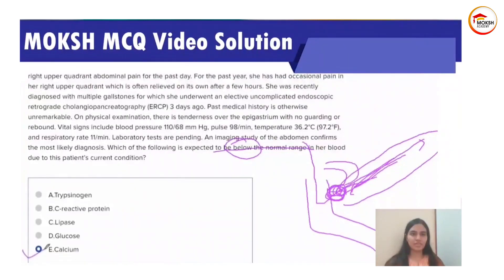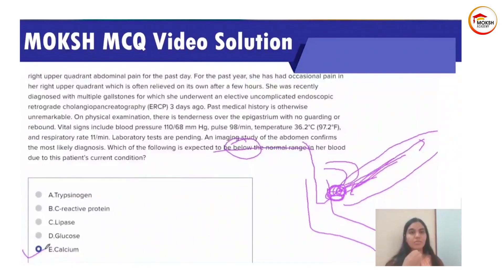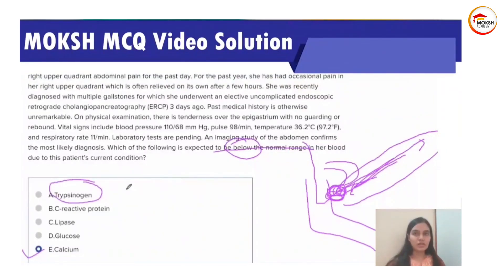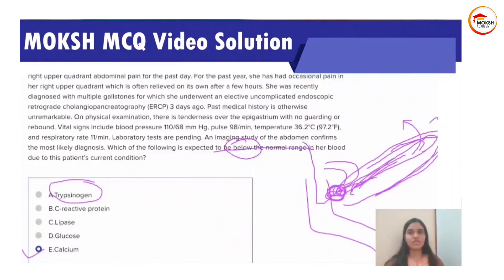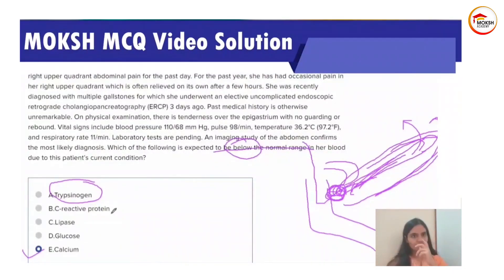Let's look at the other options to eliminate them, as you should always do on an exam. Trypsinogen is a marker for acute pancreatitis — because of elastase-mediated damage to capillaries, trypsinogen leaks back into the blood, so serum trypsinogen level will increase. CRP is an inflammation marker; with significant inflammation, CRP level will increase. Lipase is another marker of acute pancreatitis — its level will increase. Glucose: because the pancreas is involved and there is stress on the body, stress hormones cause glucose to increase as well. The only value decreasing is calcium.